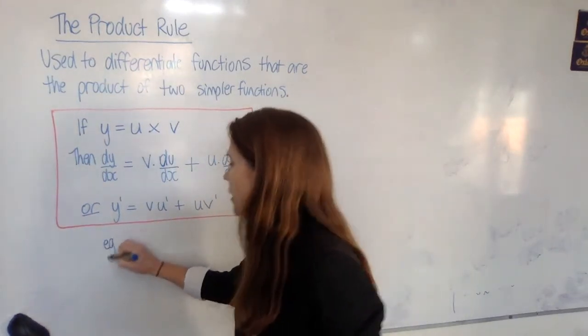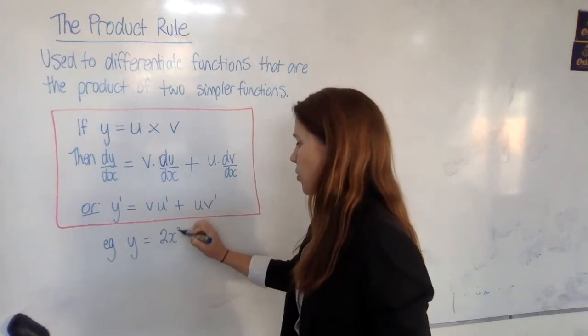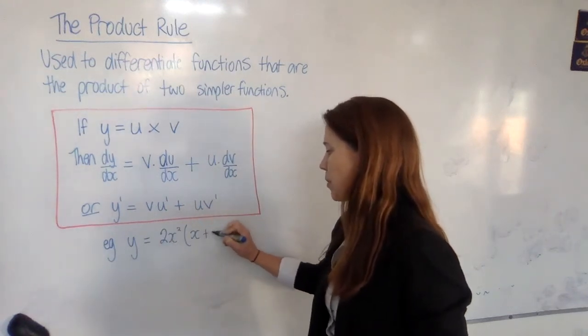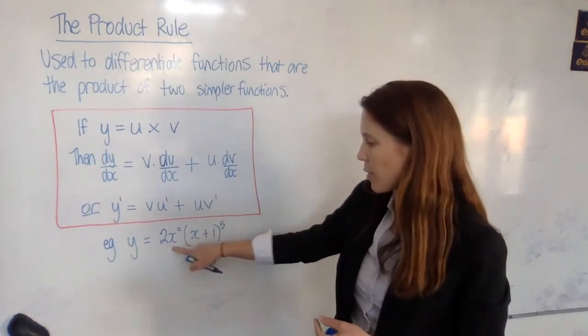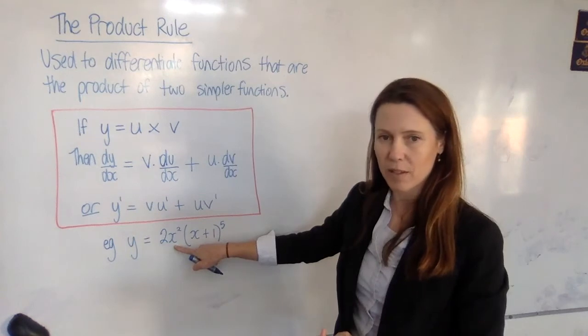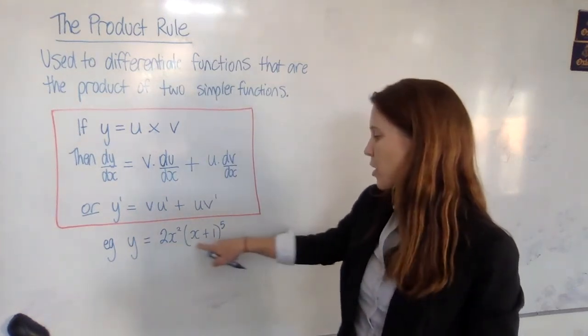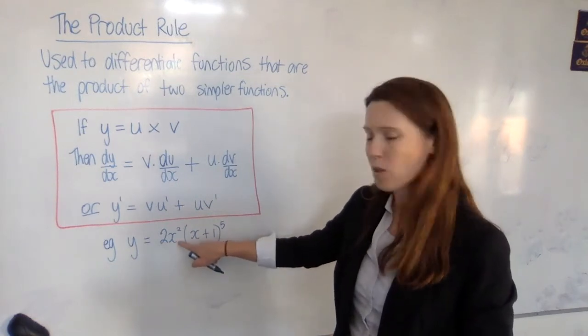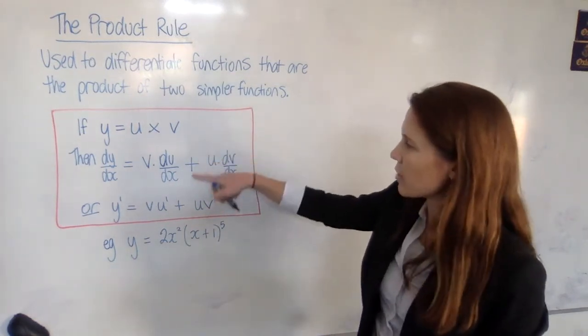So for example, let's say if y equals 2x squared times maybe some stuff in brackets, all raised to a power. Then we've basically got this part, which is a function of x in its own right, and this part, also a function of x. And we know how to differentiate both of them, but they've been multiplied together, and that makes it quite a complicated function. So this is how we deal with it.